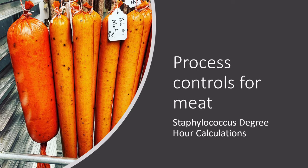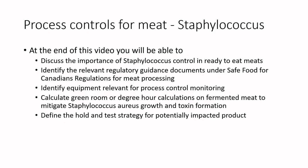This is important if you are preparing ready-to-eat meat. You need to integrate process controls into your production as part of the Safe Food for Canadians regulation. It is absolutely vital that you do not sell food that could cause potential harm to a consumer. Being able to do Staphylococcus degree hour calculations is not rocket science, so let's walk through how to do it.